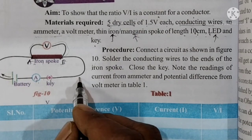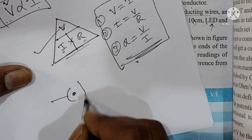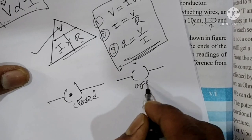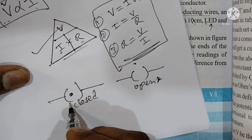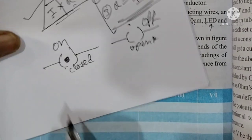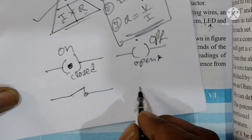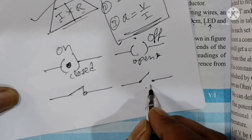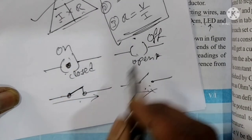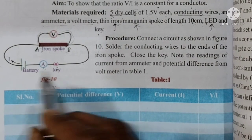Here we have a switch. The dot symbol means switch on, and switch open means switch off. A closed switch means the current will pass; open switch means off. Key means switch — an on-off switch. This is the switch symbol used in the circuit diagram.